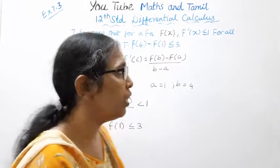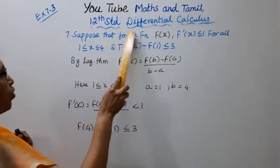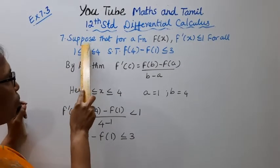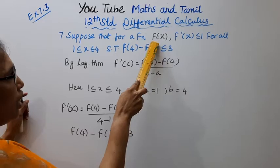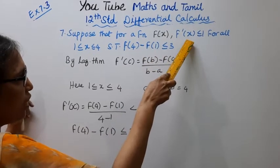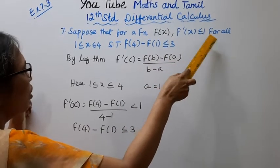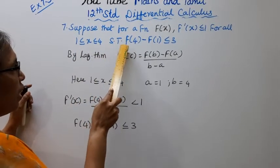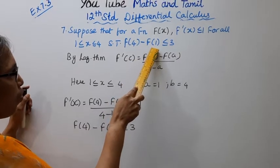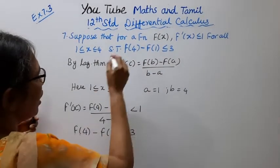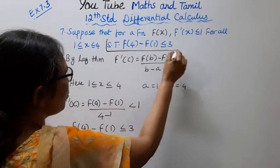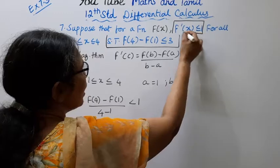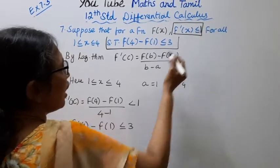Hello students, welcome to Maths and Tamil channel. 12th standard Maths, differential calculus, exercise 7.3, seventh sum. Suppose that for a function f(x), f'(x) is less than or equal to 1 for all 1 is less than or equal to x less than or equal to 4. Show that f(4) minus f(1) is less than or equal to 3.